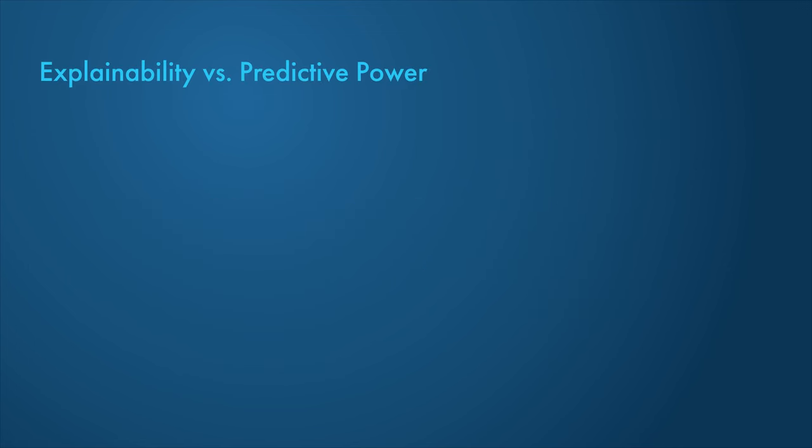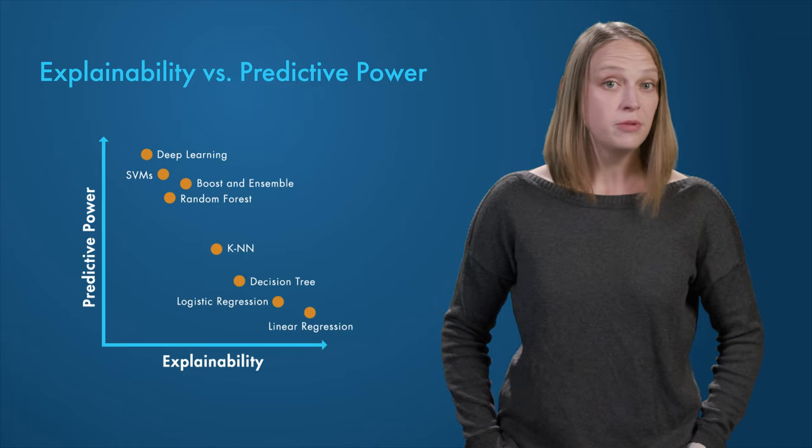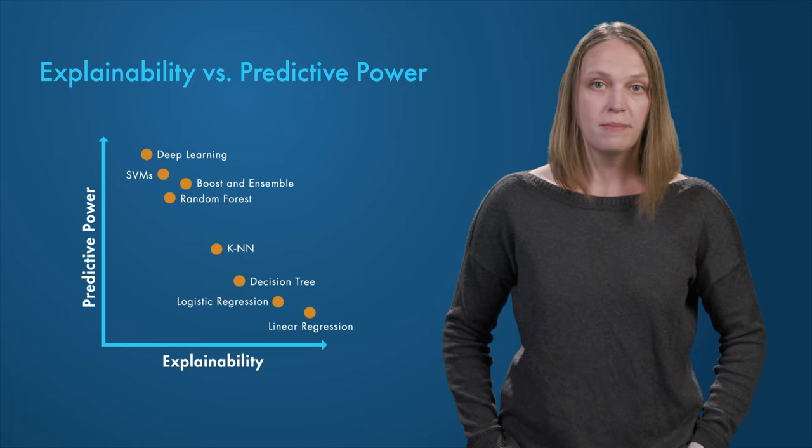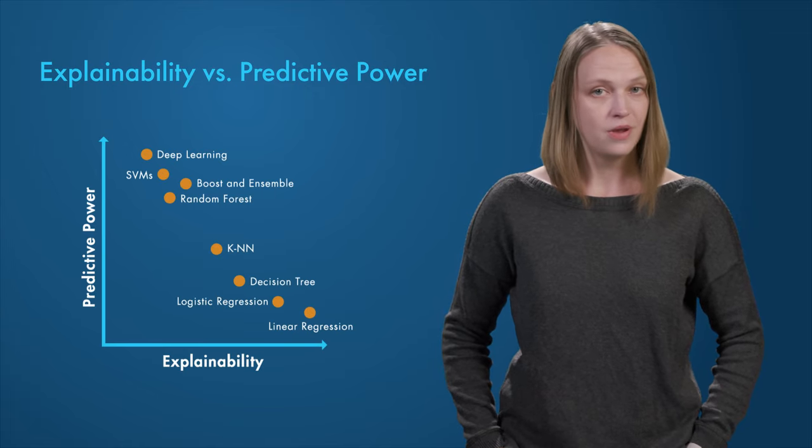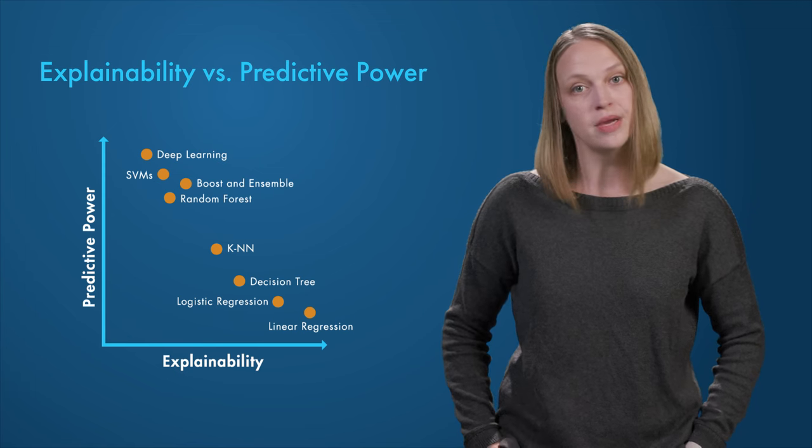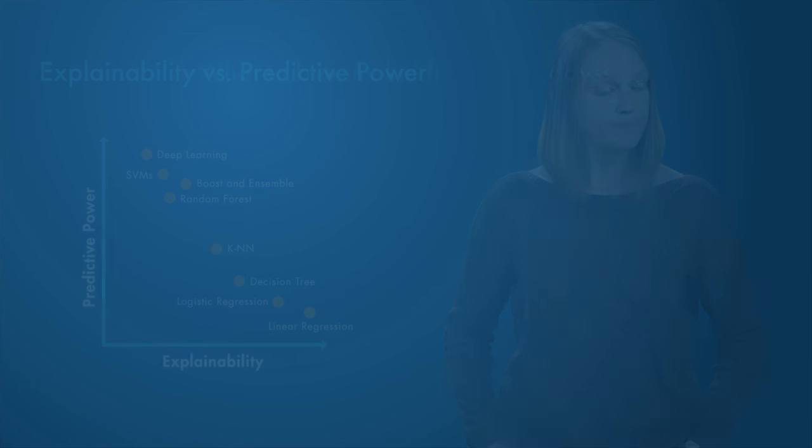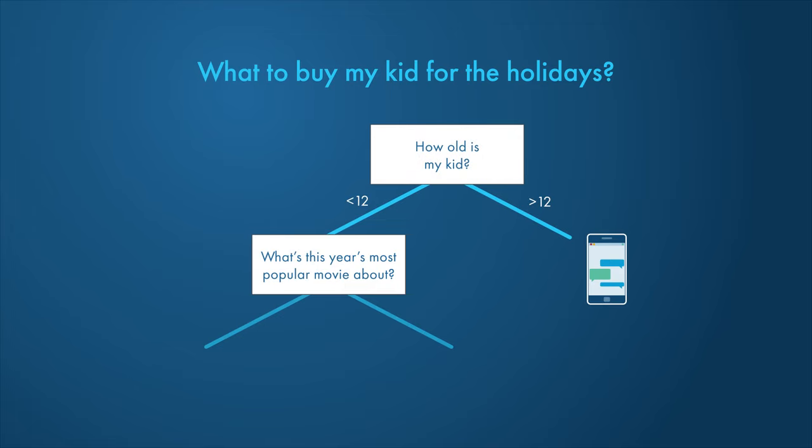Explainability often comes at the expense of power and accuracy. Deep learning models have great predictive power but they are the hardest to understand. On the other end of the spectrum, linear regression and decision trees are inherently explainable. Decision trees make it easy to trace every step towards prediction and quickly understand why a model makes a decision.